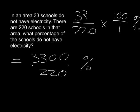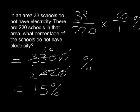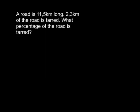Now we need to simplify that fraction. Divide by 10, divide by 10 — this one can divide by 11 to give 2, and that one by 11 gives 30. And 30 over 2 gives you 15. So your answer was 15%.